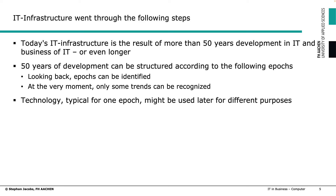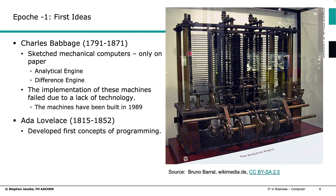Let's start with some pre-epochs. First ideas about how to build mechanical computers were developed in the 19th century. Charles Babbage was one person who engineered an analytical engine and a difference engine. However, the problem was he could only sketch his ideas on paper because mechanical engineers weren't able to work precisely enough to actually build the machine. What you can see on the right side is a modern version of Babbage's ideas, built in 1989 and on display at the British Museum — and it works.